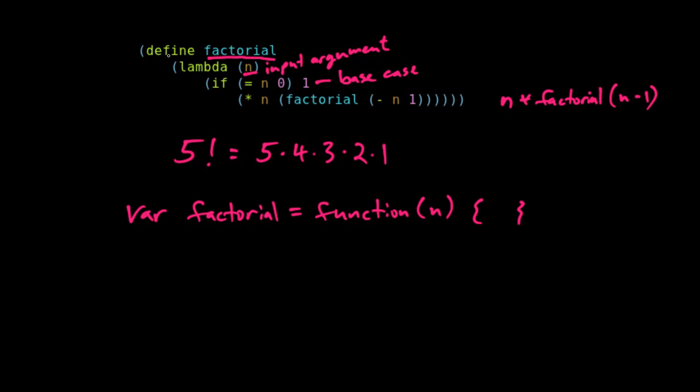Up here, we're defining factorial to be lambda of n. So this lambda n is really like the function of n in JavaScript. So that's the analogy there.